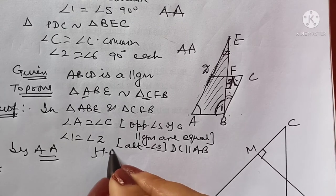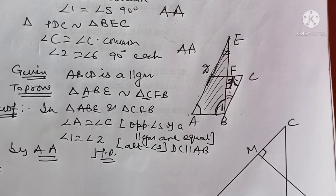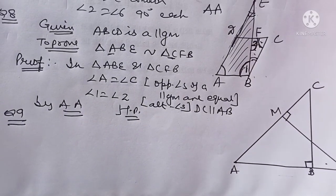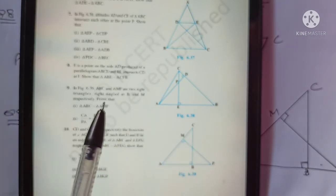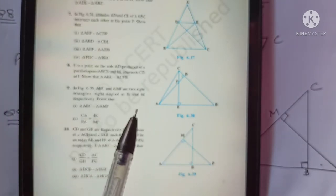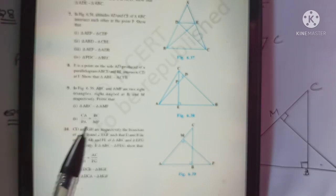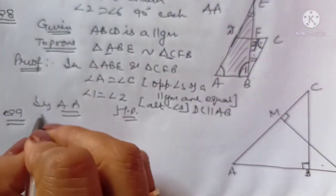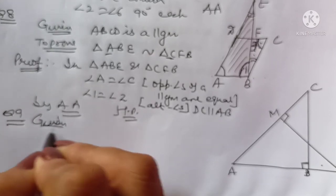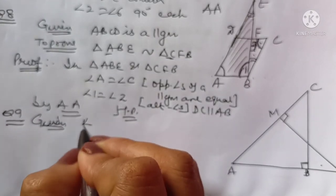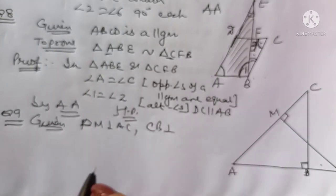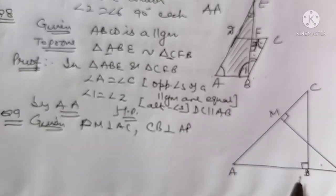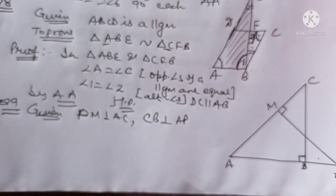That's all — hence proved for Question 8. Let's quickly take the last question of this video: Question Number 9. In the given figure, ABC and AMP are two right triangles. Given: PM is perpendicular to AC and CB is perpendicular to AP, which means angle M equals 90° and angle B equals 90°.